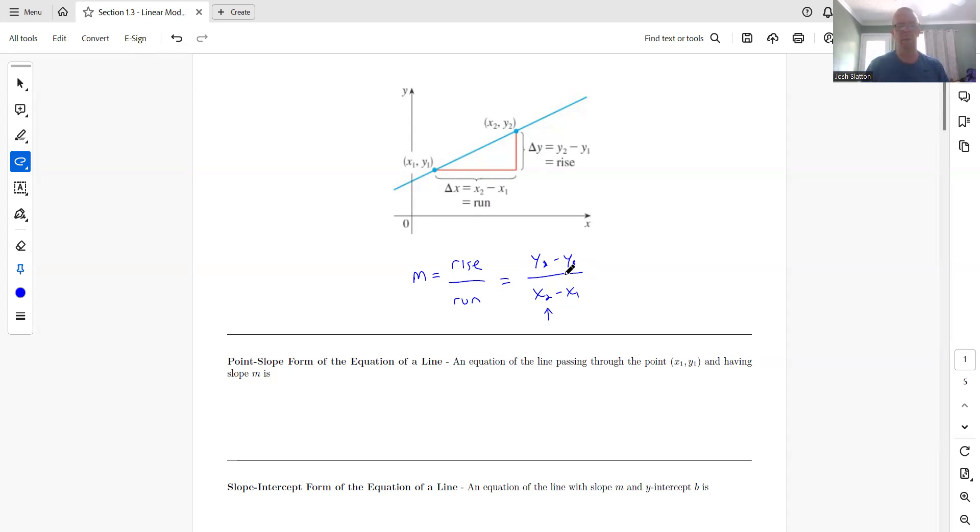So then once we get the slope, we can talk about point-slope form. So an equation passing through the point x1, y1 and having a slope m, where m is the slope.